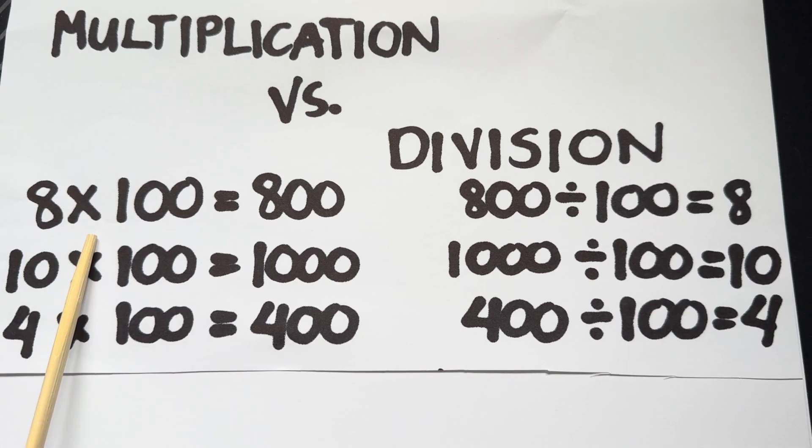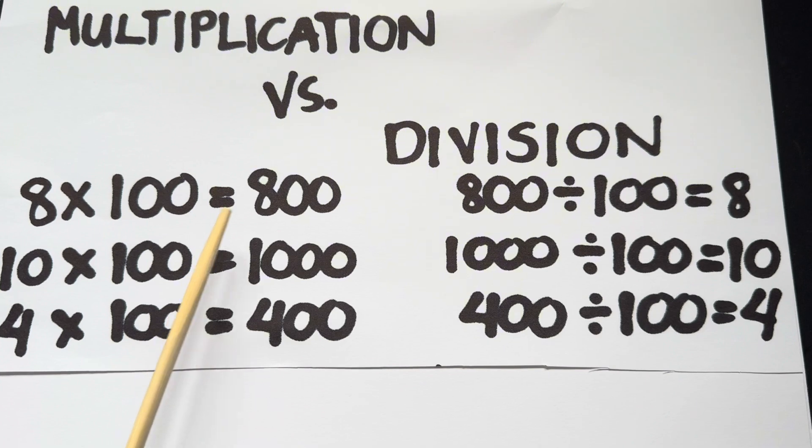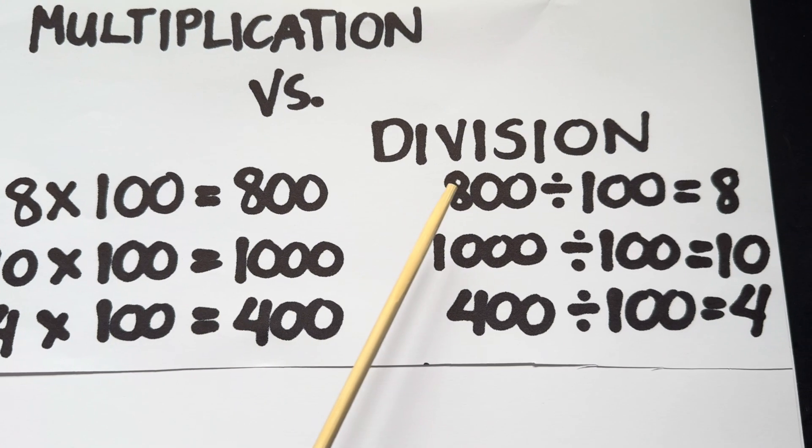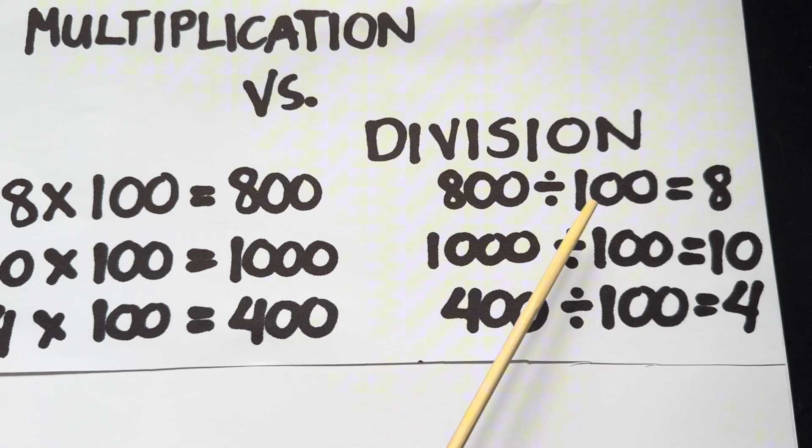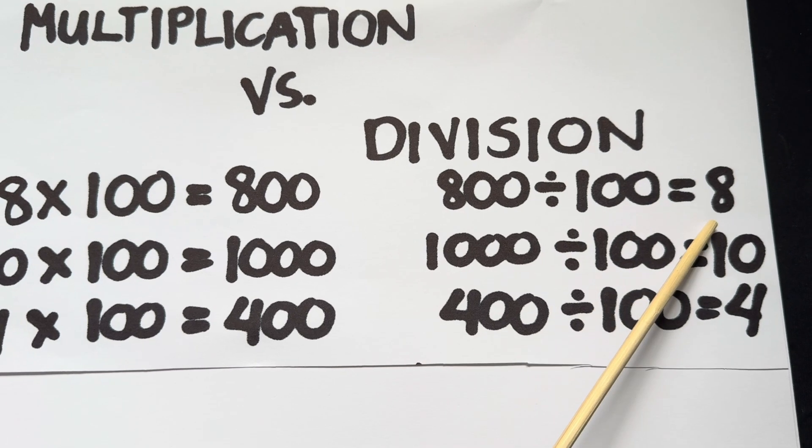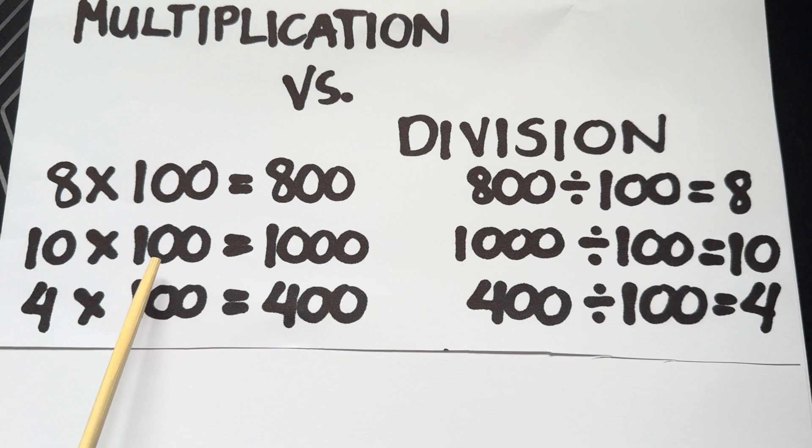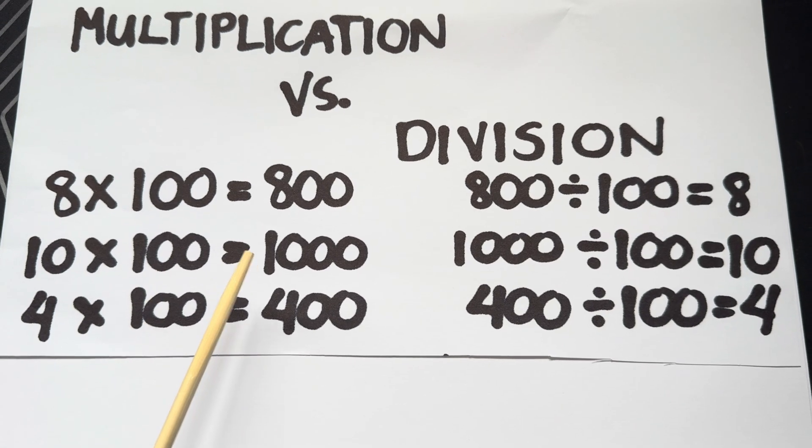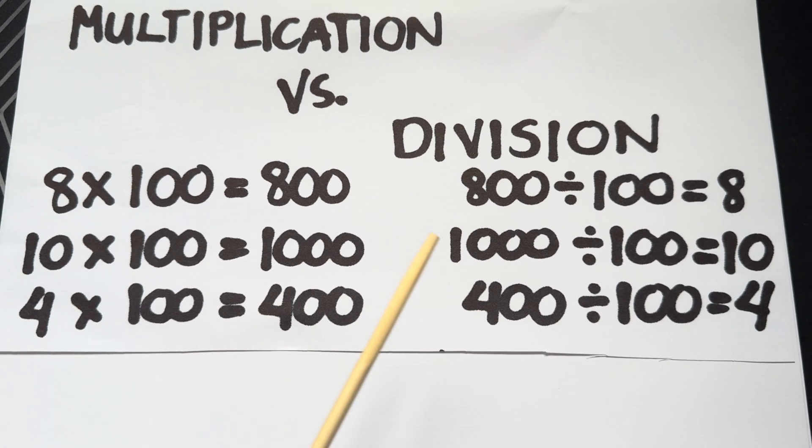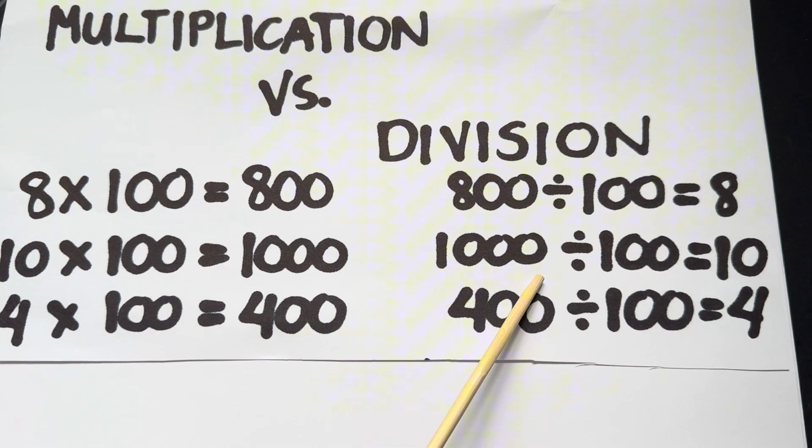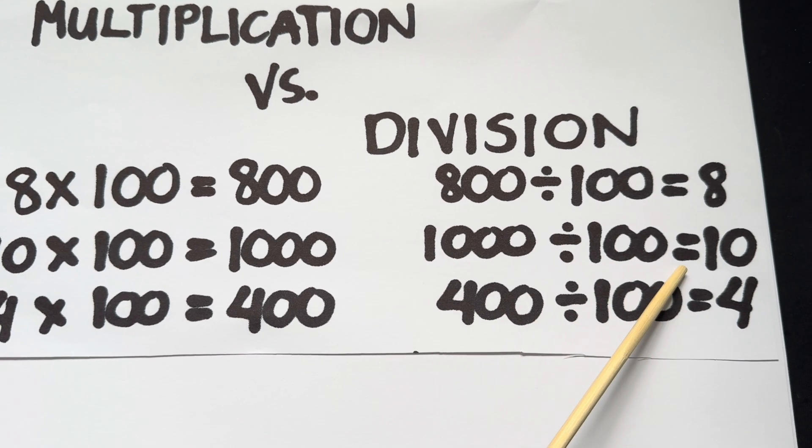8 multiplied by 100 is equals to 1,000. In division, 1,000 divided by 100 is equals to 8.